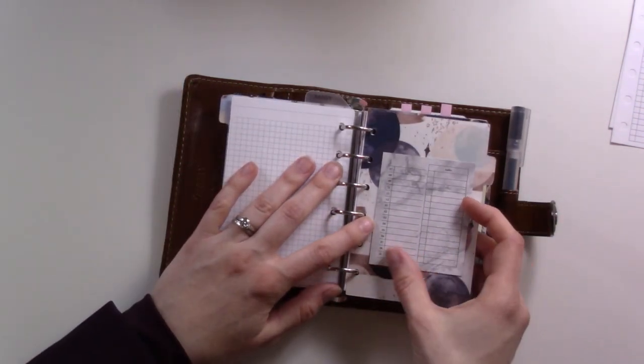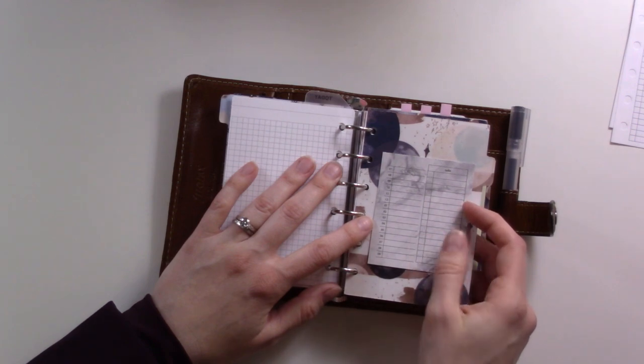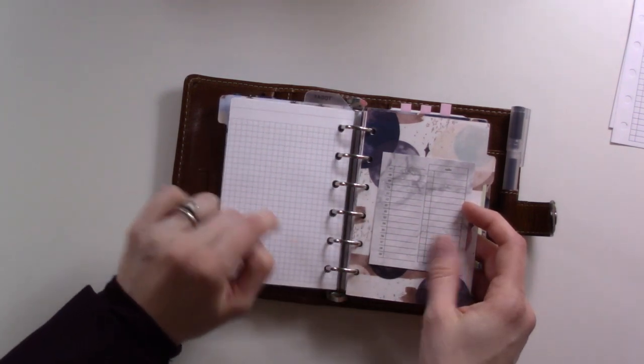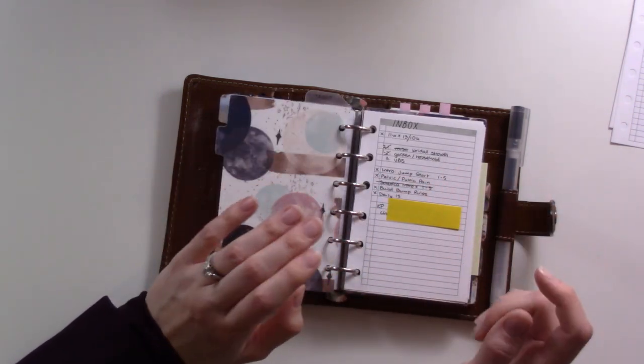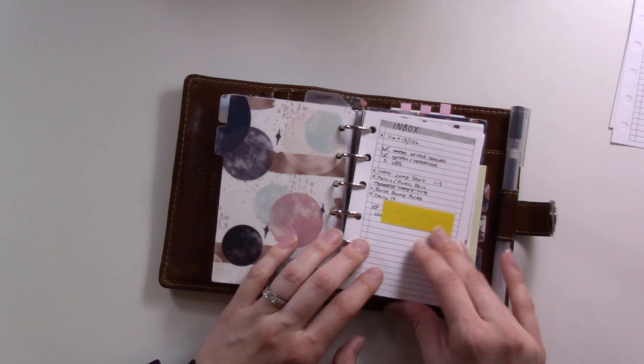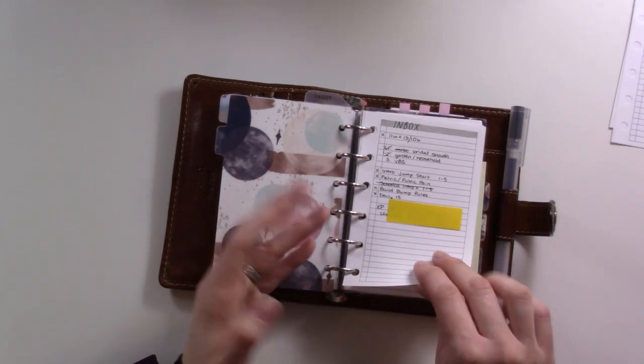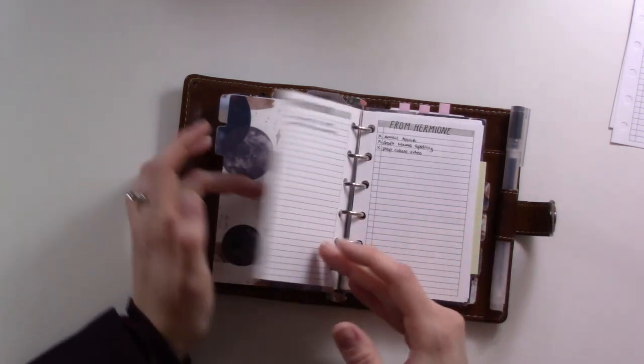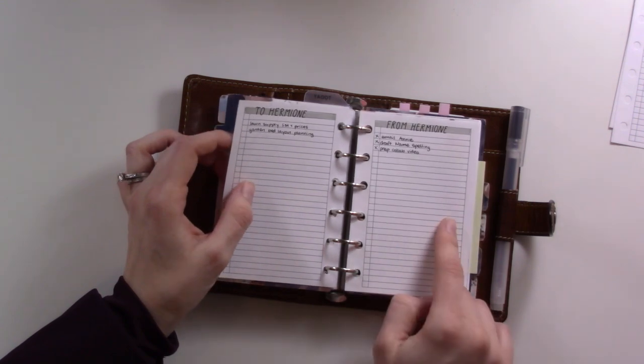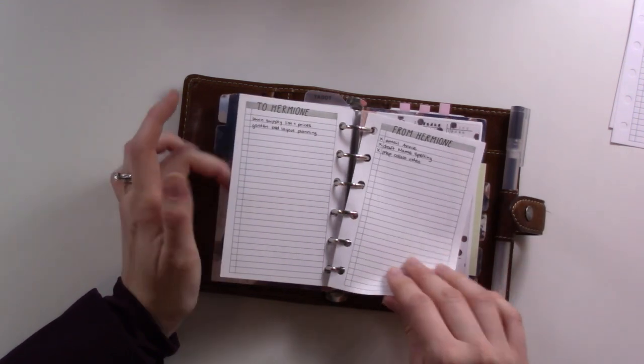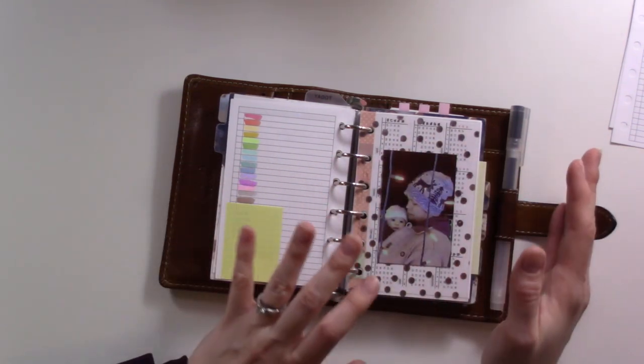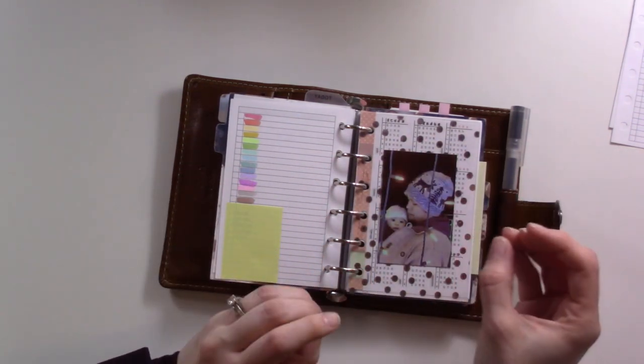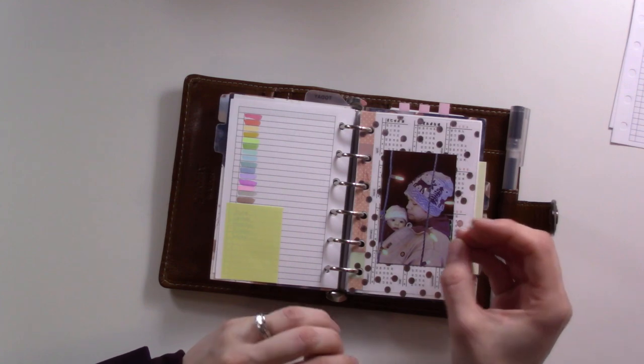These are also Peanuts Planner Co dailies on post-it notes. I have not been using those, I've been using the printable ones instead so they're still there. This next section is like my inbox, so it's just sort of a generic if I don't know where to write something I'll jot it down here. These are for moving things to and from my happy planner but like I said I haven't been using that much lately.